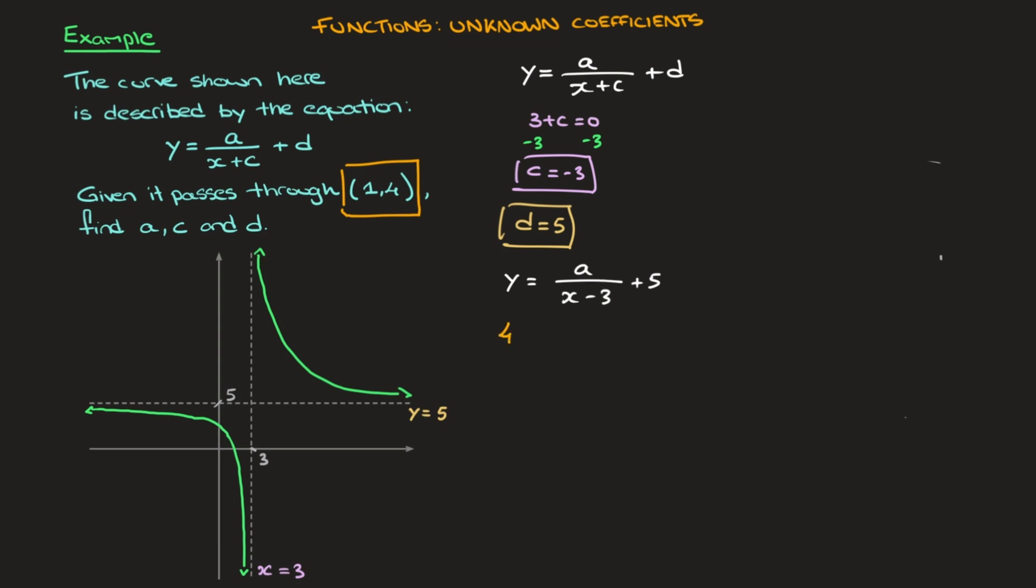So I'll replace y by 4. And that's equal to a over 1 minus 3, where I've replaced x by 1, plus 5. That leads us to 4 equals a over 1 minus 3, which is negative 2, plus 5. And now I solve this equation for a. And for that, I'll start by getting rid of this 5 that's being added on the right hand side. And I do that by subtracting 5 from both sides. So that becomes 4 minus 5, which is negative 1, equals a over negative 2.